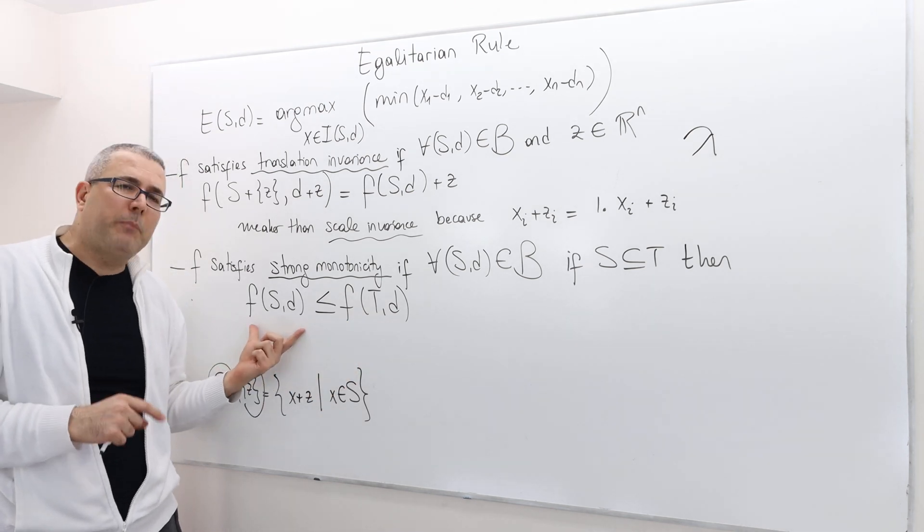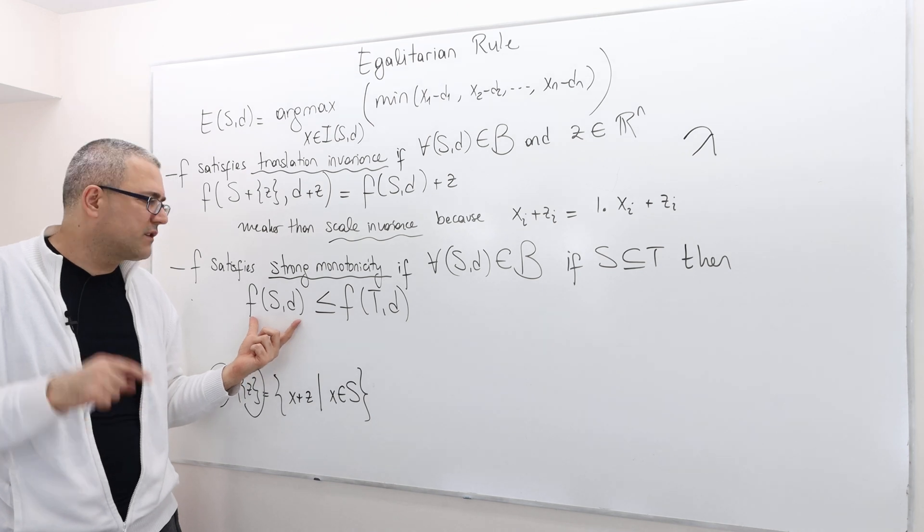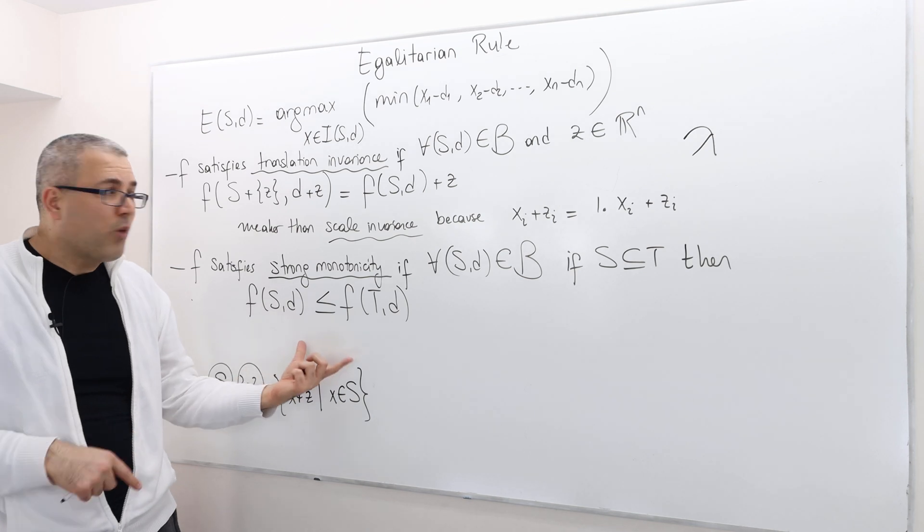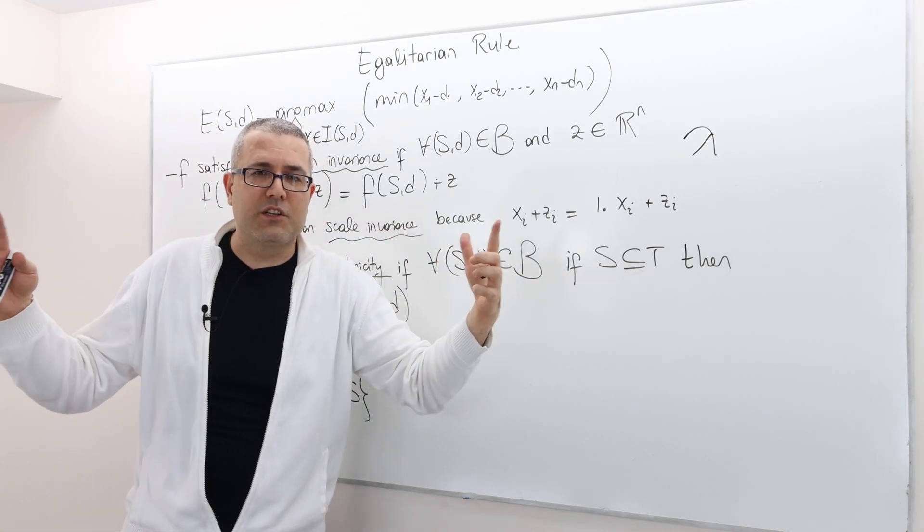Should be greater than or equal to the payoff vector that was suggested by this rule in the bargaining game S, when obviously T is larger.